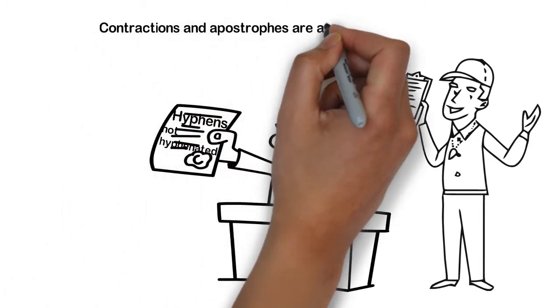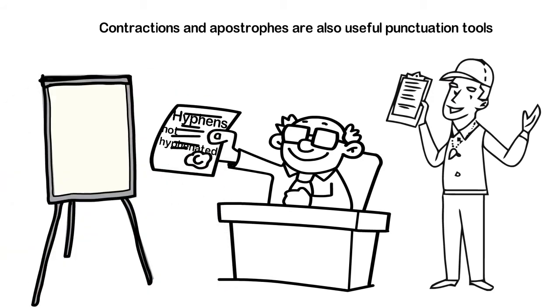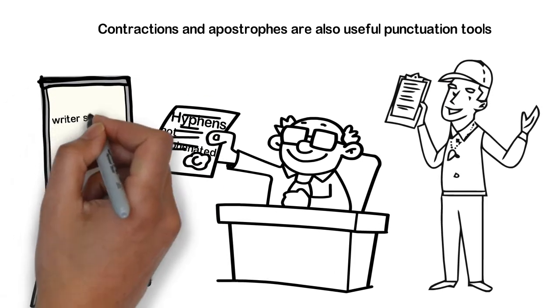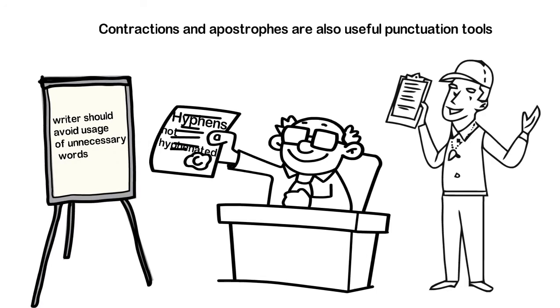Contractions and apostrophes are also useful punctuation tools in any effective writing. To make any writing appear more eloquent, a writer should avoid usage of unnecessary words to make the sentences short and precise.